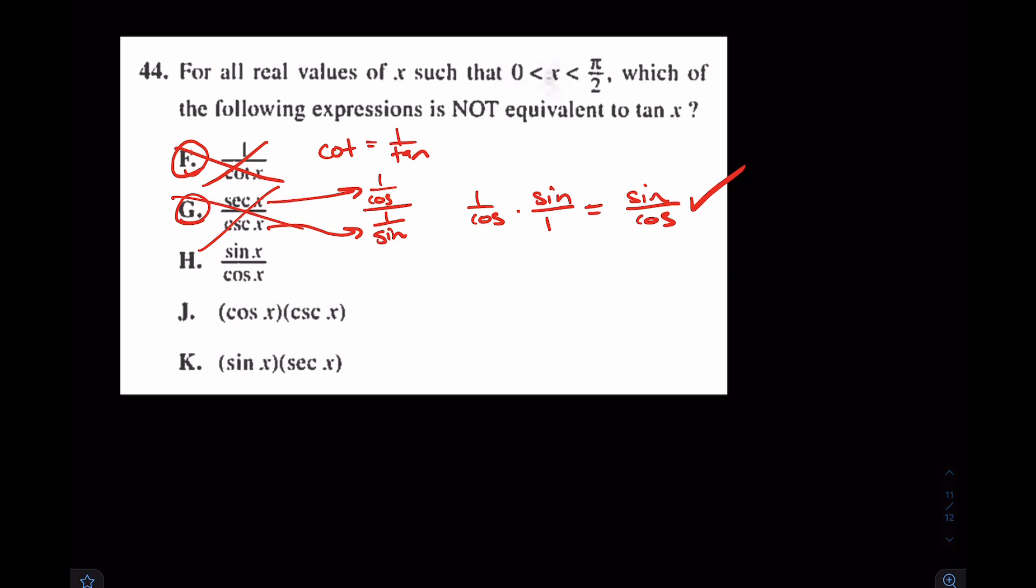Take a look at h. h is also just tangent, literally straight up, sine over cosine. Let's look at j. j is cosine times 1 over sine. Oh, and that's actually cosine over sine, which equals cotangent. That's not tangent. So I really like the answer of j.